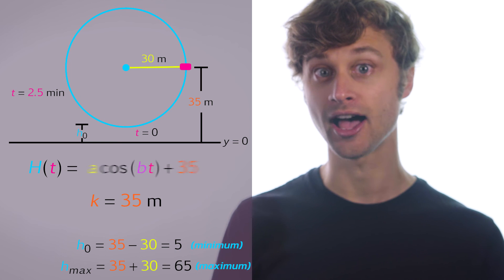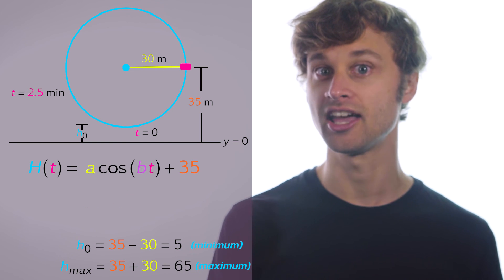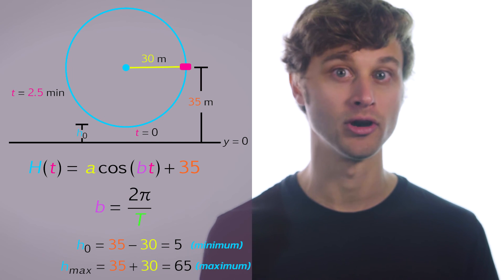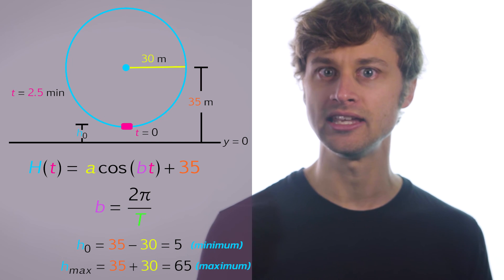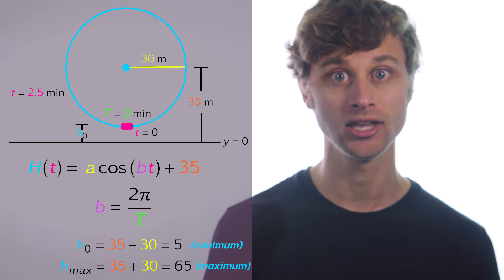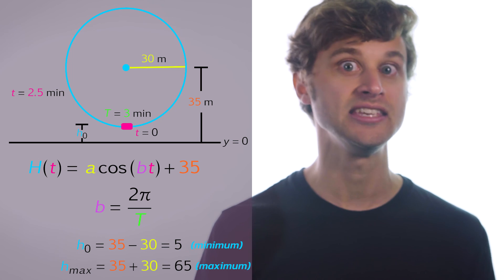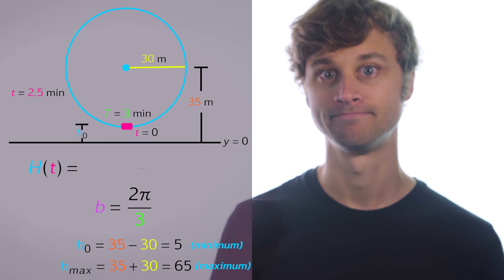b again is related to our period, and remember for sine and cosine b is equal to 2π over the period. But we know what the period is—it's three minutes. We get three minutes for every one cycle, so t is equal to three, which means that b is equal to 2π over three.